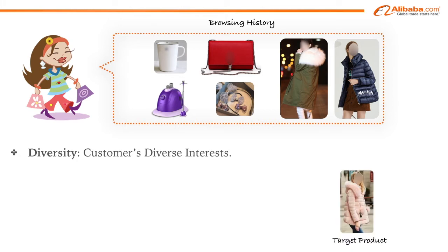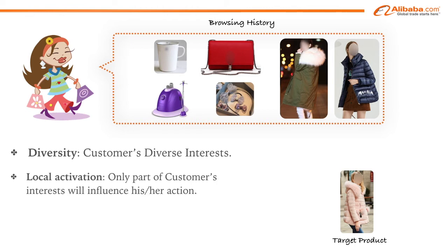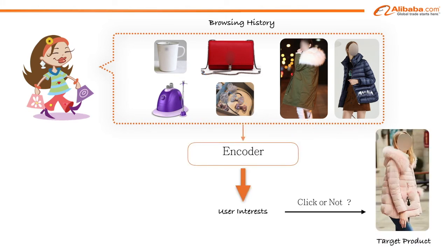Actually, it is not necessary to compress all the diverse interests of a user into the same vector when predicting a candidate product, because only part of users' interests will influence their action. For example, a young lady will click a recommended down coat mostly due to the coats rather than the drinking vessel in her last week's shopping list. Motivated by this, we propose a novel model — Deep Interest Network — which adaptively calculates the representation vector of user interests by taking into consideration the relevance of historical behaviors given a candidate ad.